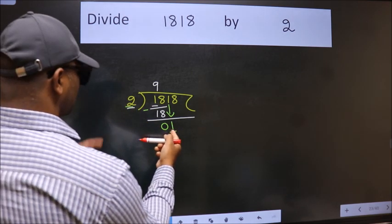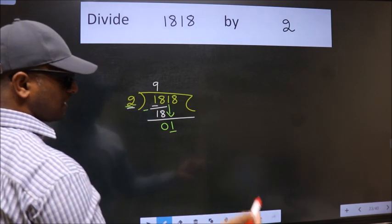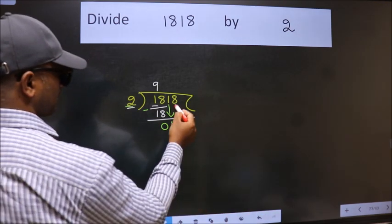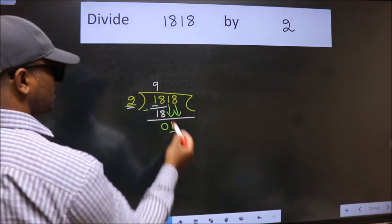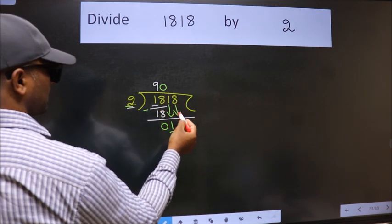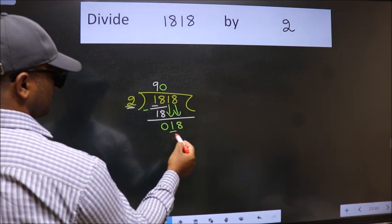So we should bring down the second number. And the rule to bring down second number is put 0 here. Then only we can bring this number down.